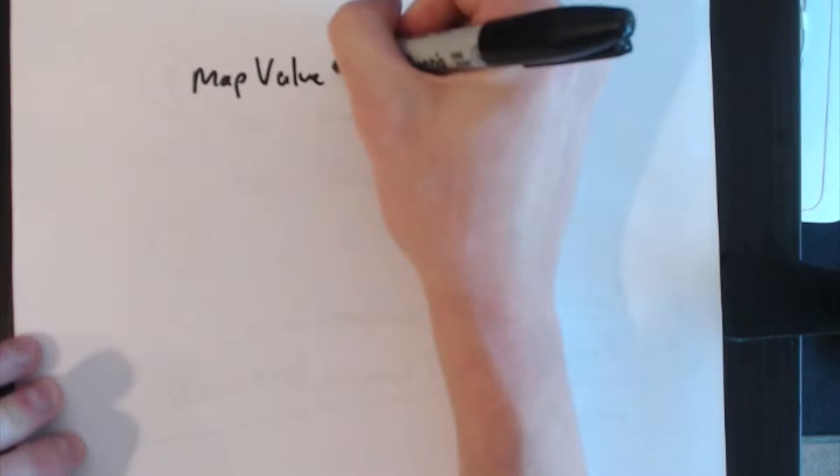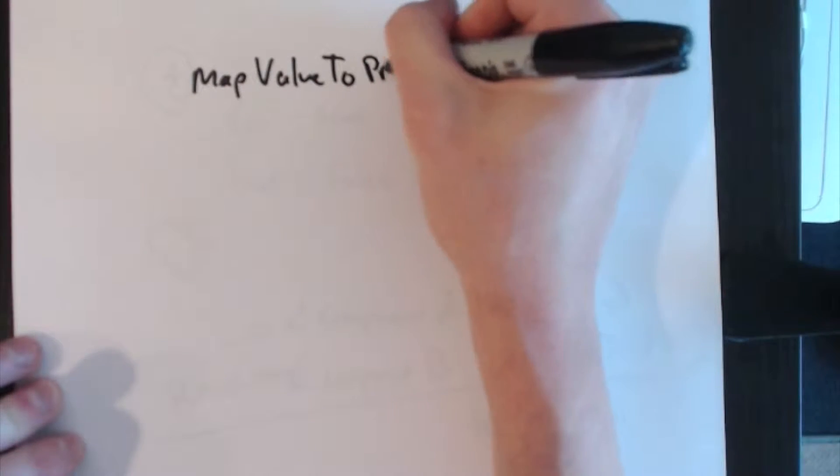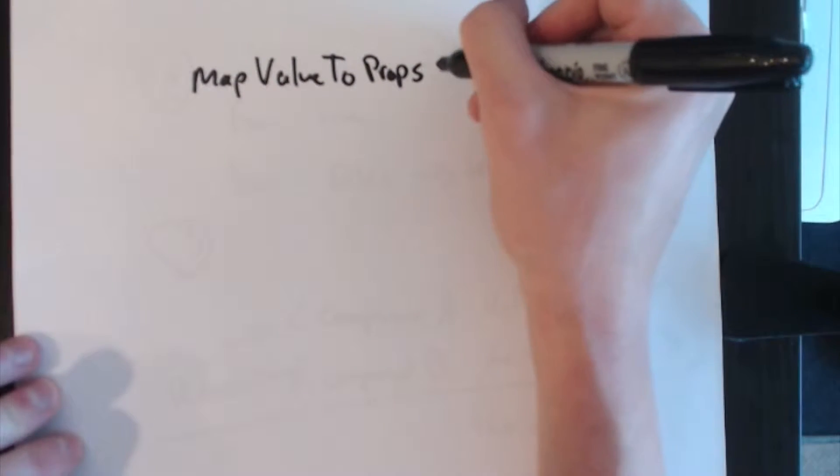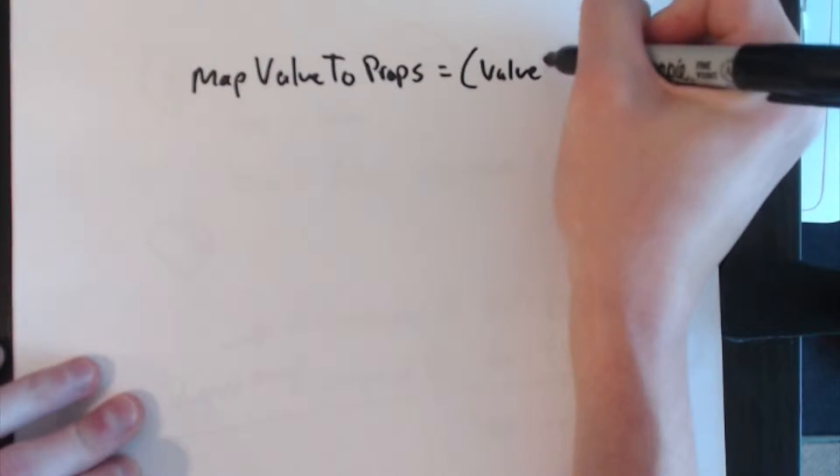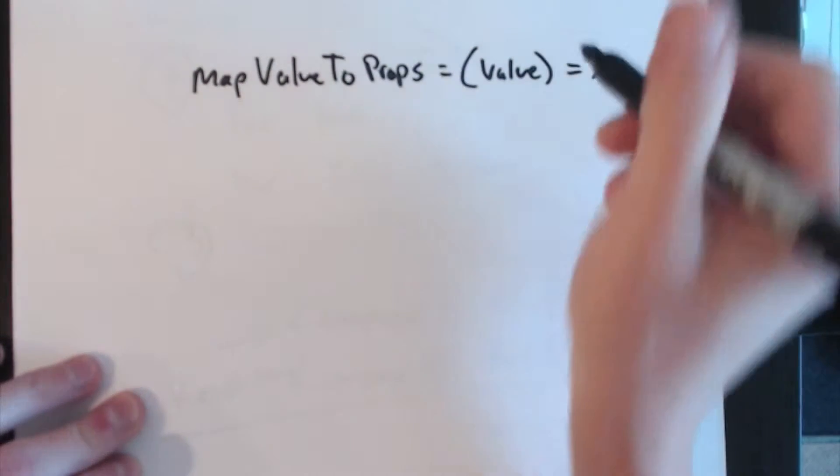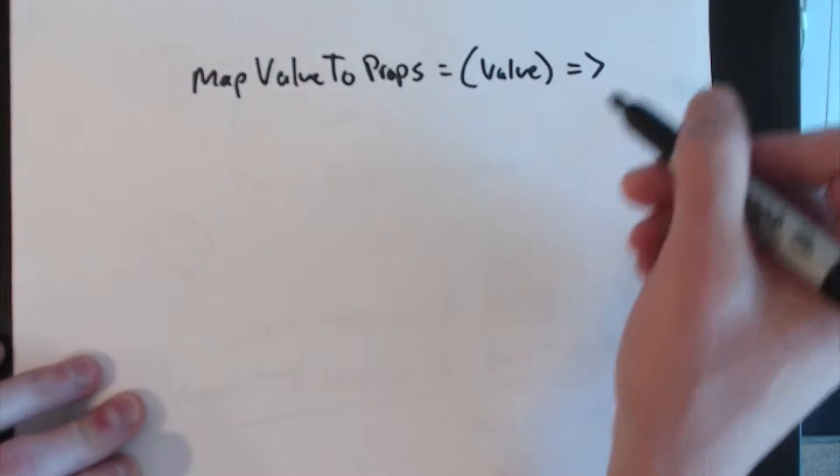So how can we create an API on top of React that lets us take advantage of this for better performance? In Redux you have mapStateToProps—we could create a mapValueToProps function. That's a function that takes in the context value and then returns an object.